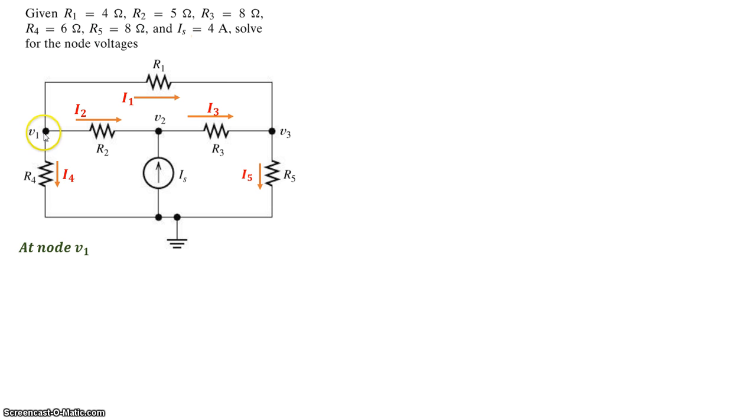Now doing analysis at node V1, we see I1 is leaving the node, I2 is leaving the node, and I4 is also leaving the node. So sum of the currents leaving that node is equal to sum of the currents coming in, which is nothing, so I1, I2, plus I4 should equal to zero.